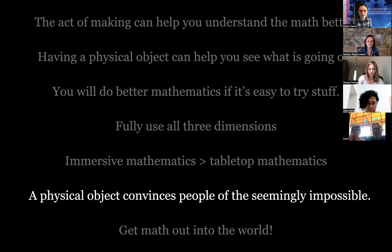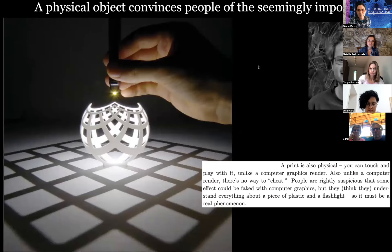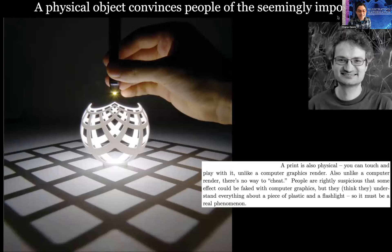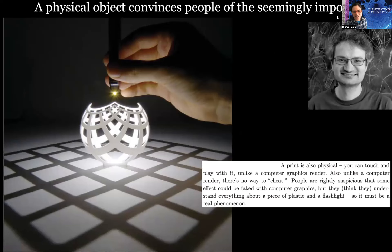The sixth reason: a physical object convinces people of things that seem impossible. For instance, stereographic projection. You had Henry Segerman here a few weeks ago — the idea that when you hold a flashlight up to this little curvy 3D-printed object, you get squares projected on the wall. Henry says: 'A print is physical — you can touch and play with it, unlike a computer graphics render. There's no way to cheat. People are rightly suspicious that some effect could be faked with computer graphics, but at least they understand everything about a piece of plastic and a flashlight, so it must be a real phenomenon.'